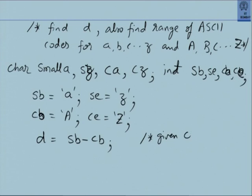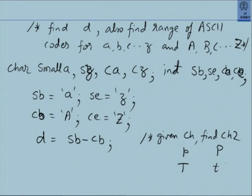Given CH, find CH2: if given CH is in the small range, then CH2 should be the capital version — add the difference. If CH is in the big range, CH2 is the small version — subtract the difference. He has given an excellent approach: even if the ASCII table is not known, you can correctly solve the problem. Now let us look at the solution.